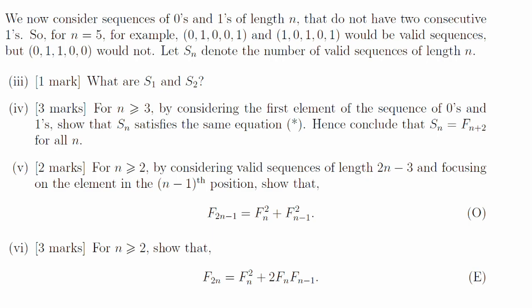Part 3. S1 is 2 because anything goes for a sequence of length 1. But S2 is only 3, not 4, because 1 1 is not allowed. Part 4. Your sequence might start with a 0 or 1. If it starts with a 0, then it's just an allowable sequence after that of length n minus 1. But if it starts with a 1, then it needs to have a 0 next, followed by an allowable sequence of length n minus 2. That's the same equation as f n at the top, and the values at the start match up as well.